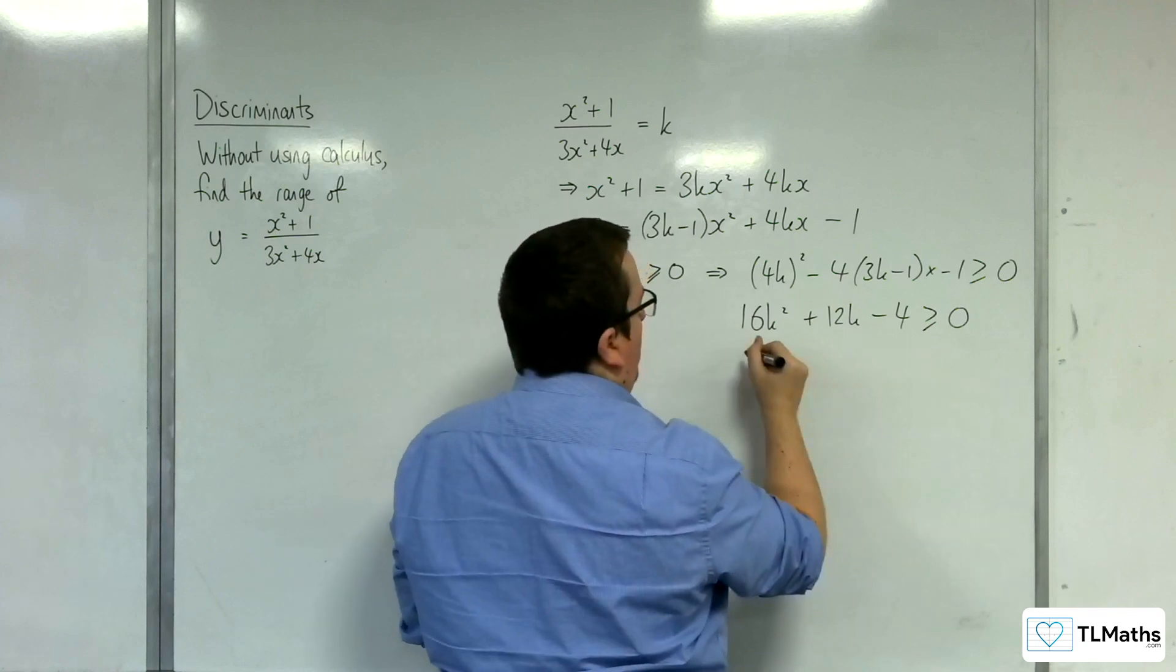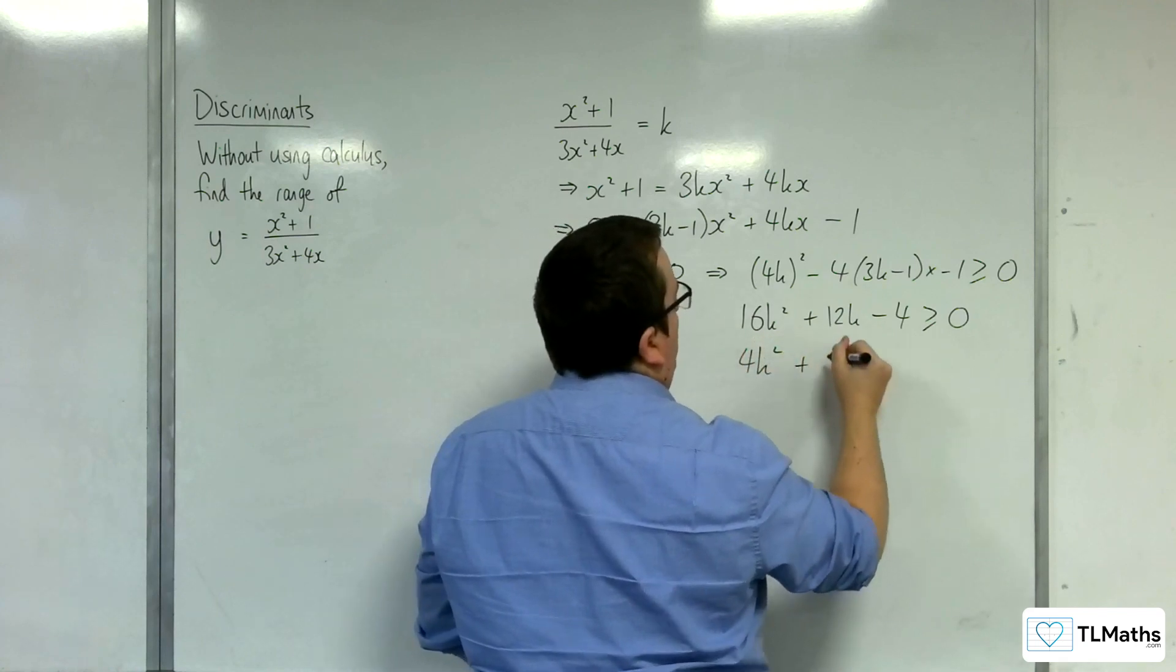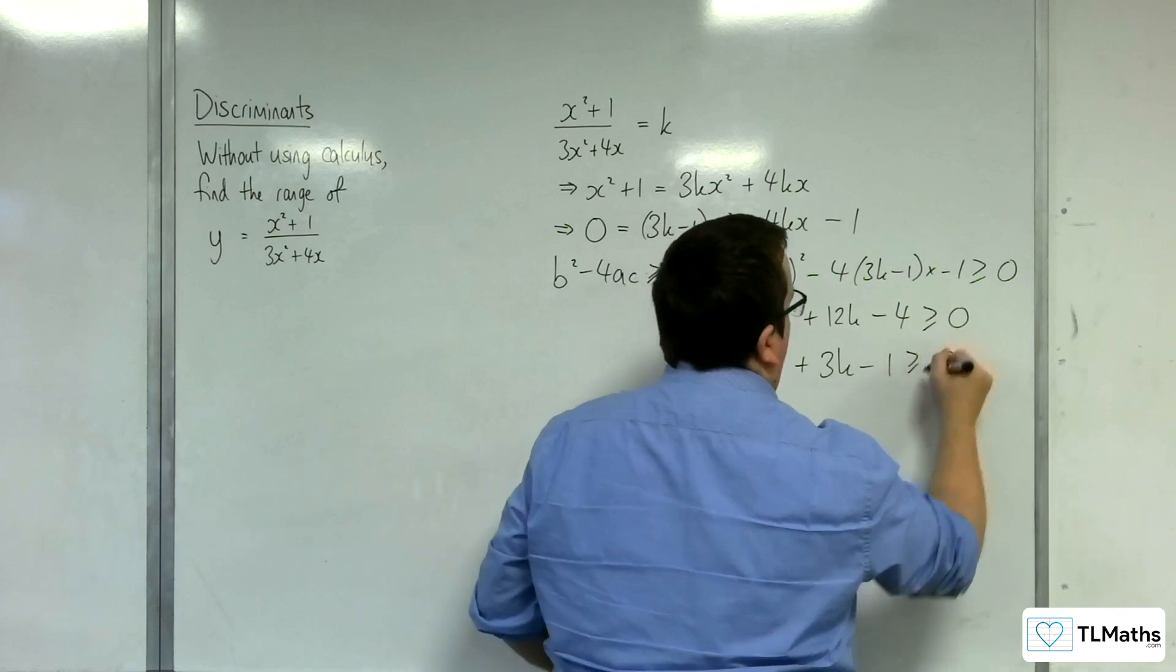So I'm going to divide through by 4. And we get 4k squared plus 3k take away 1 is greater than or equal to 0.